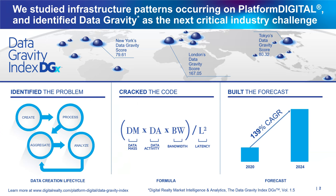What we're really looking at and wanting to contribute to the industry is: we see data gravity as a challenge, and we see it as one of the biggest impediments to a successful digital transformation. We want to get the word out and have people understand that this could be a challenge. We're able to look at this data gravity phenomenon and actually start to make some predictions — how it's growing, where it's growing. The predictions show nearly 140% compound annual growth in data gravity, which is extraordinary if you think about it.